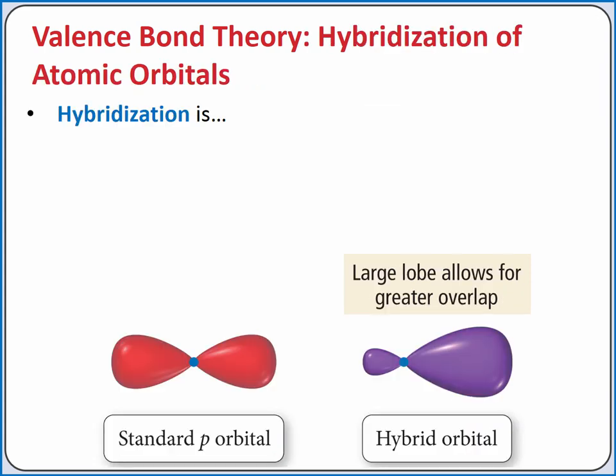Some molecules, however, have molecular geometries that require hybrid orbitals. Hybridization is the process of combining the standard s, p, d, and f atomic orbitals on an atom to create hybrid atomic orbitals.